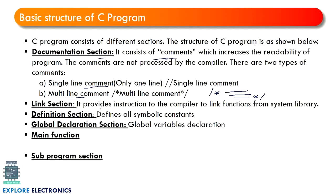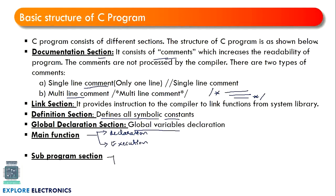The next section is the link section, where we provide instructions to the compiler to link libraries to our program. In the global declaration section, all global variables are declared. In the main function we have two sections: declaration and execution. In the sub-program section we also have declaration and execution.